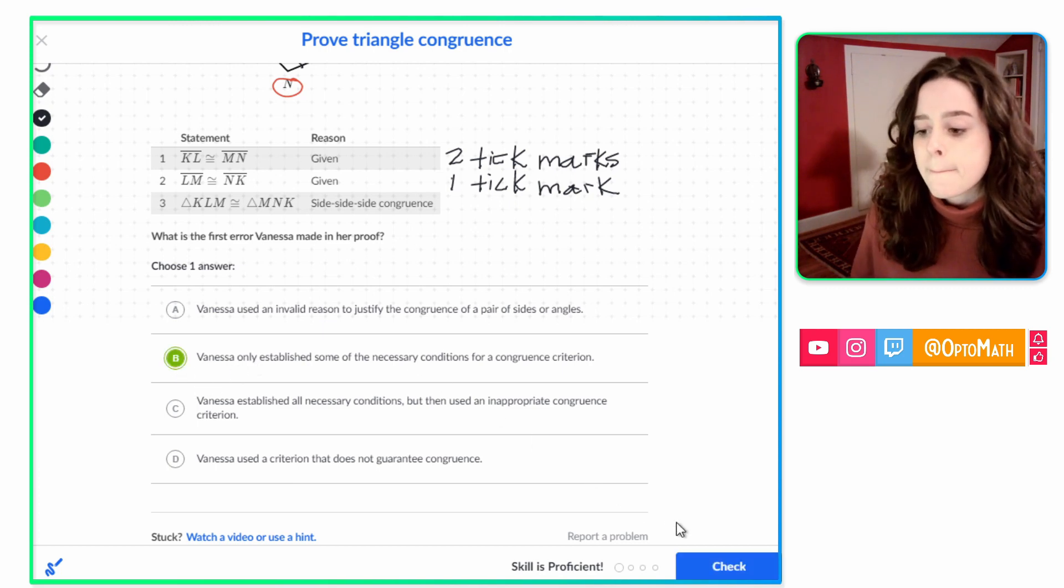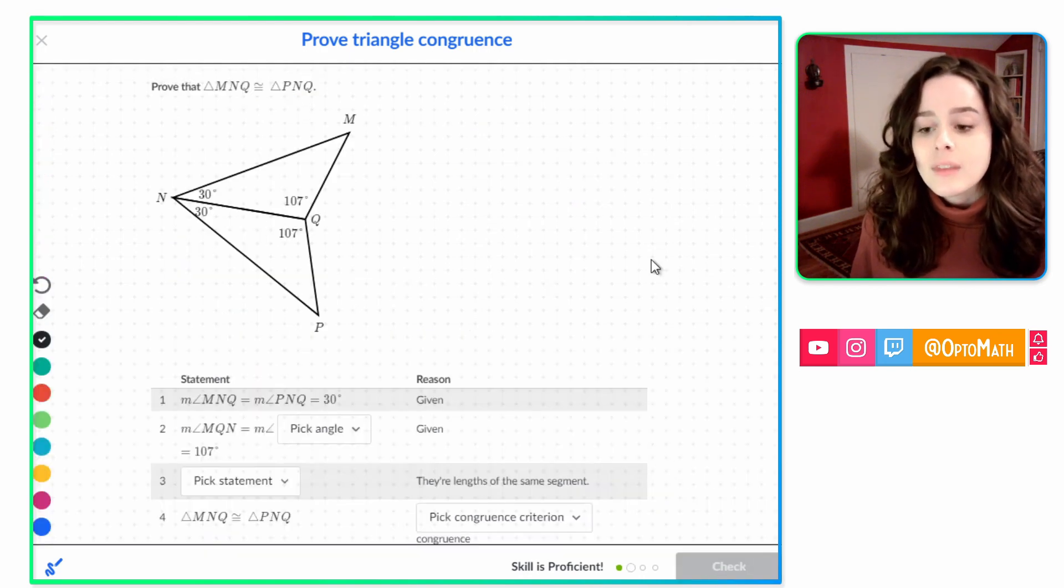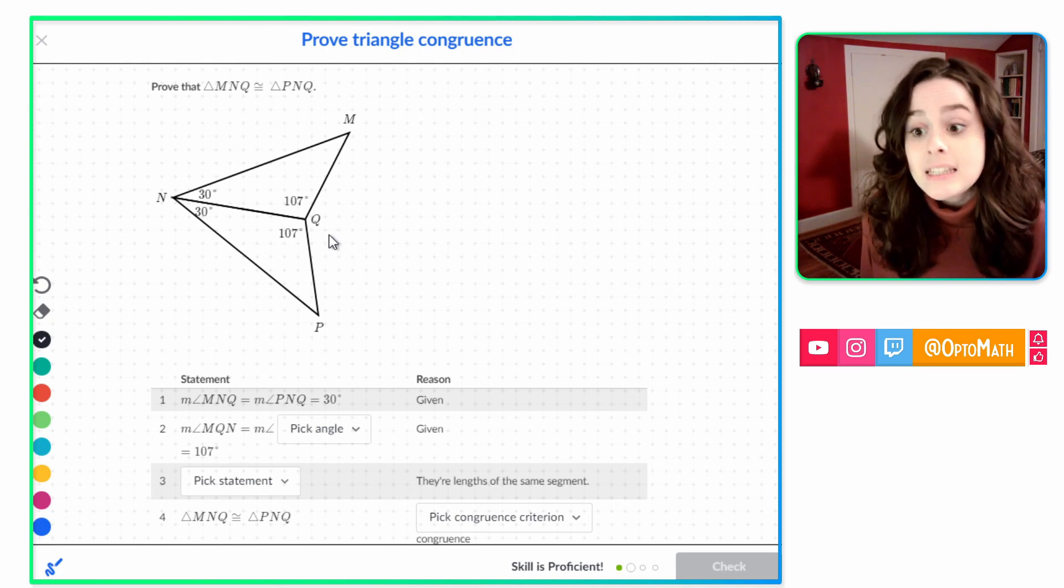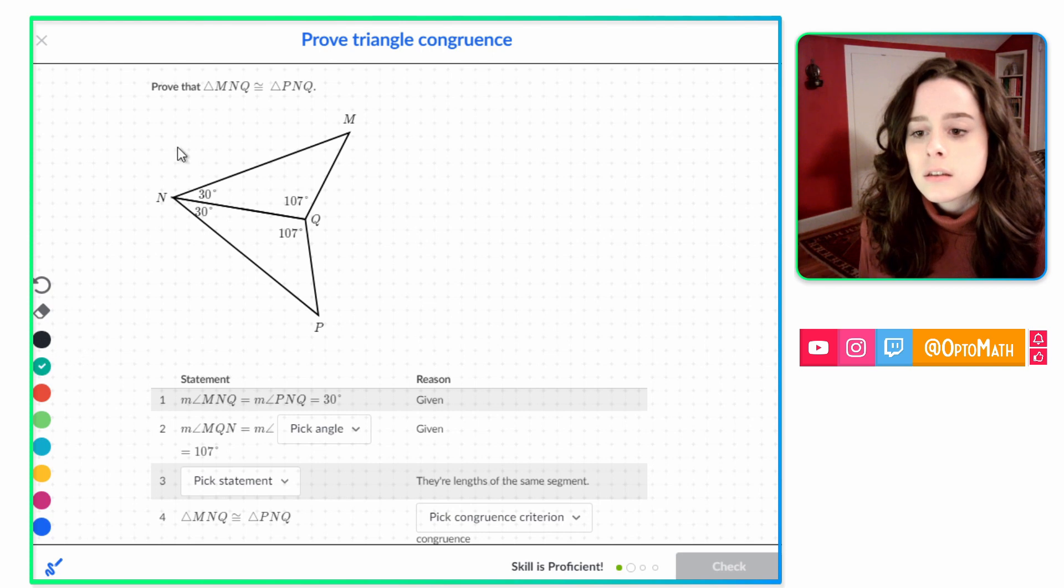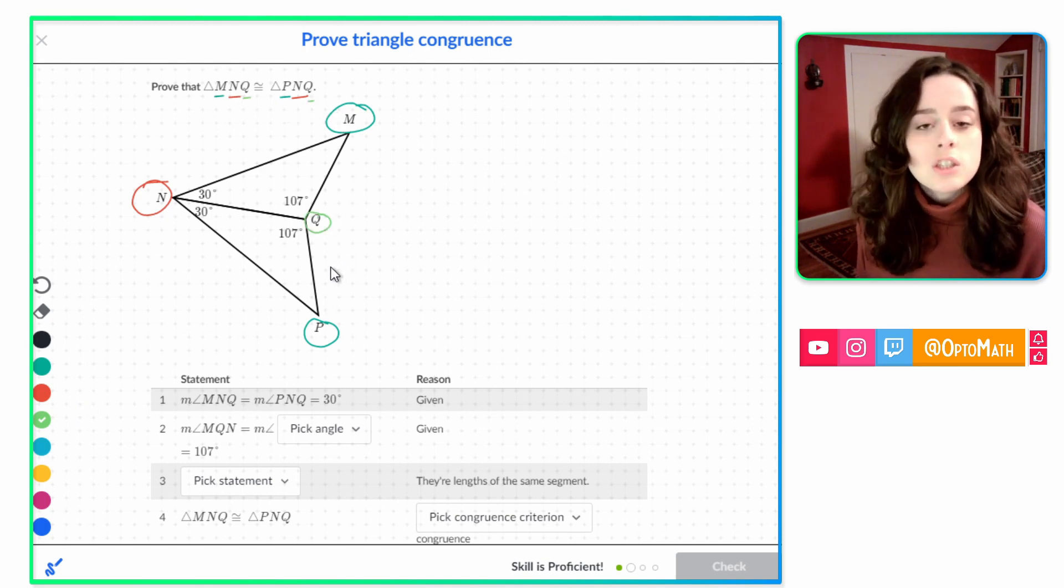Awesome. Next question. Here we have another shared side situation. It looks more like a kite, and it is a kite. Let's look at our congruence statement. M and P go together. N and N go together, which is no surprise because they're the same letter. And Q and Q go together. Again, no surprise.